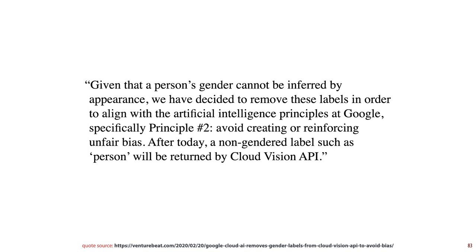With that, let's look closer at the question of gender classification. First, let's see what Google offered as an explanation for removing the feature. They state: 'Given that a person's gender cannot be inferred by appearance, we have decided to remove these labels in order to align with the artificial intelligence principles at Google, specifically principle number two: avoid creating or reinforcing unfair bias.' Their argument centers on the impossibility of inferring gender from physical attributes. But is that the whole story? We cannot perfectly infer a traffic sign or a digit from an image, but we can still make a pretty good guess. Guessing a person's sex or gender can be done with pretty high accuracy compared to most machine learning tasks. So the fact that it can't be done perfectly surely can't be the whole story — that is true for almost all machine learning applications and for any label returned by the Cloud Vision API.